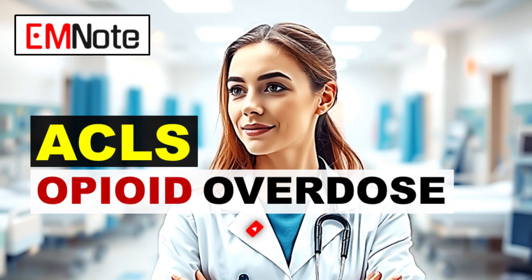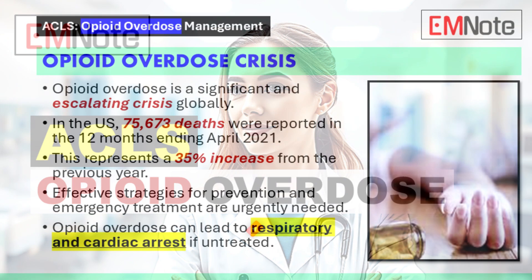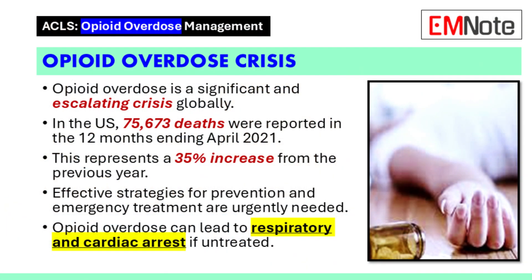Opioid overdose is a significant and escalating crisis in North America and worldwide. The U.S. National Center for Health Statistics reported approximately 75,673 deaths resulting from opioid use in the 12-month period ending in April of 2021. This represents a nearly 35% increase from the prior year. Effective strategies for primary prevention, emergency treatment, and secondary prevention are needed to address this crisis.